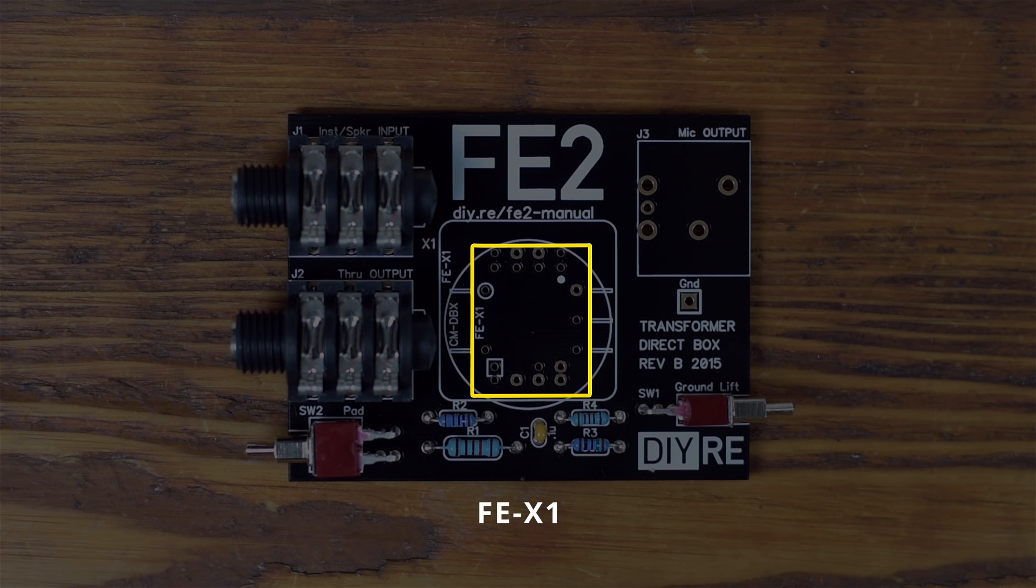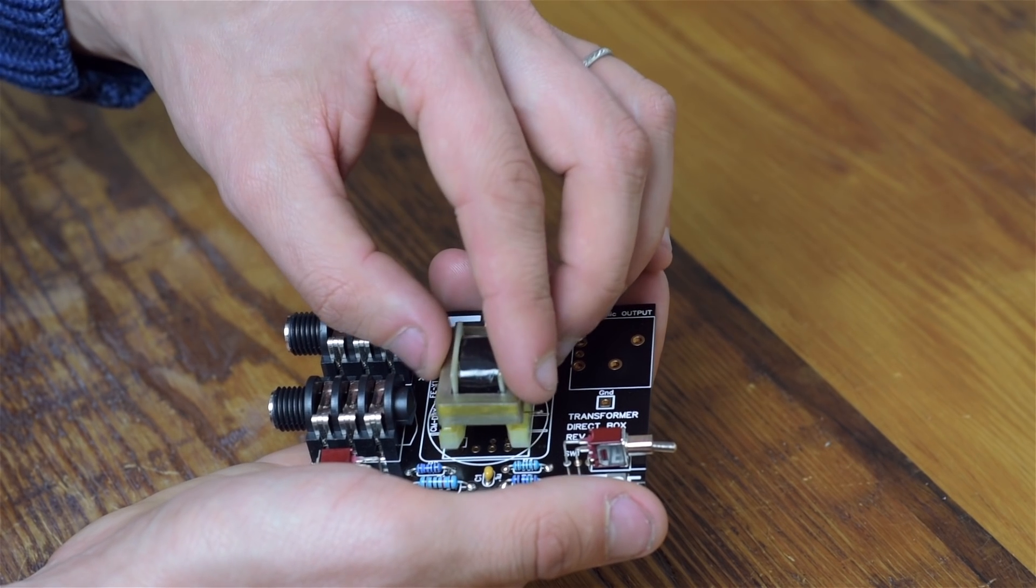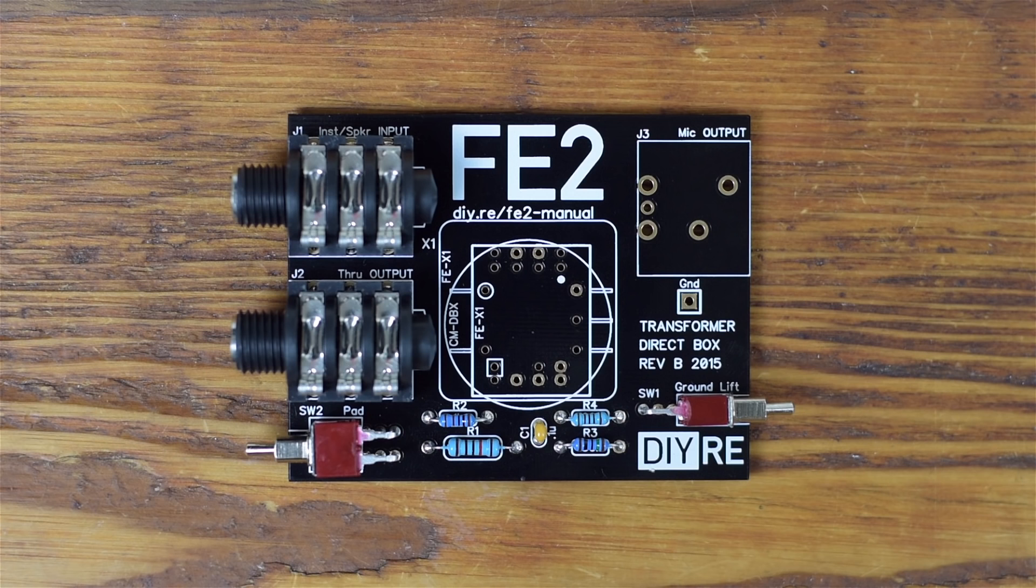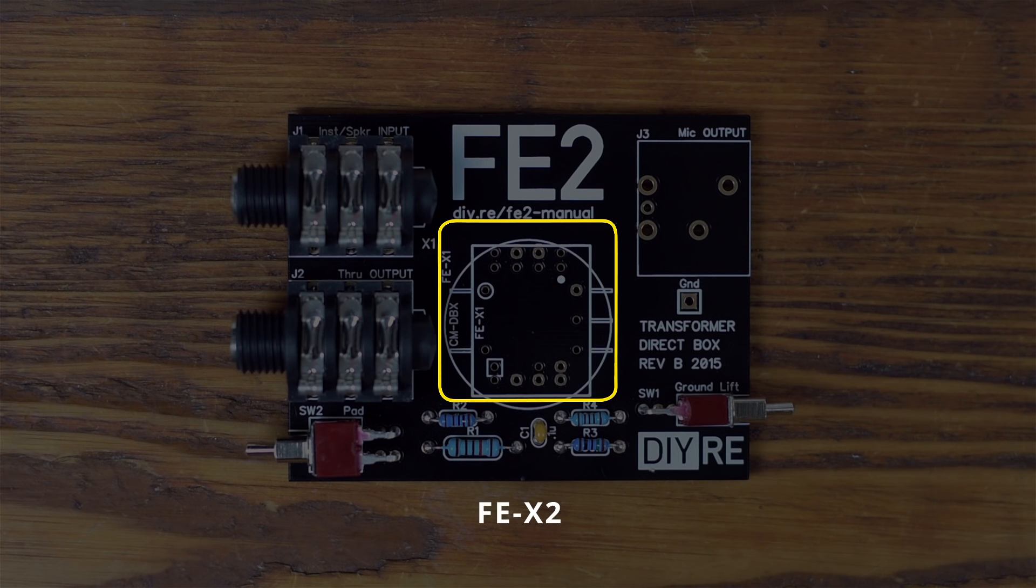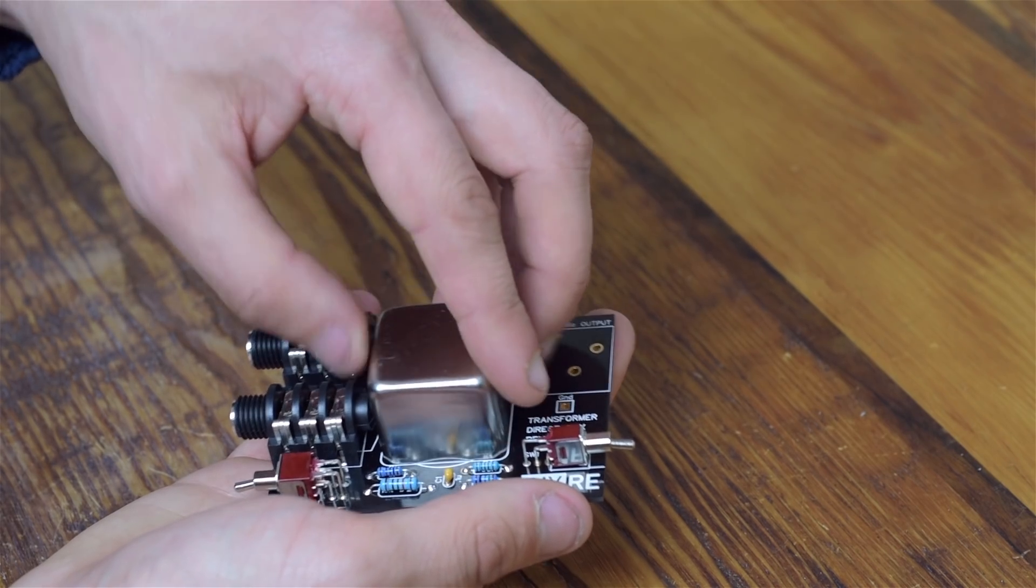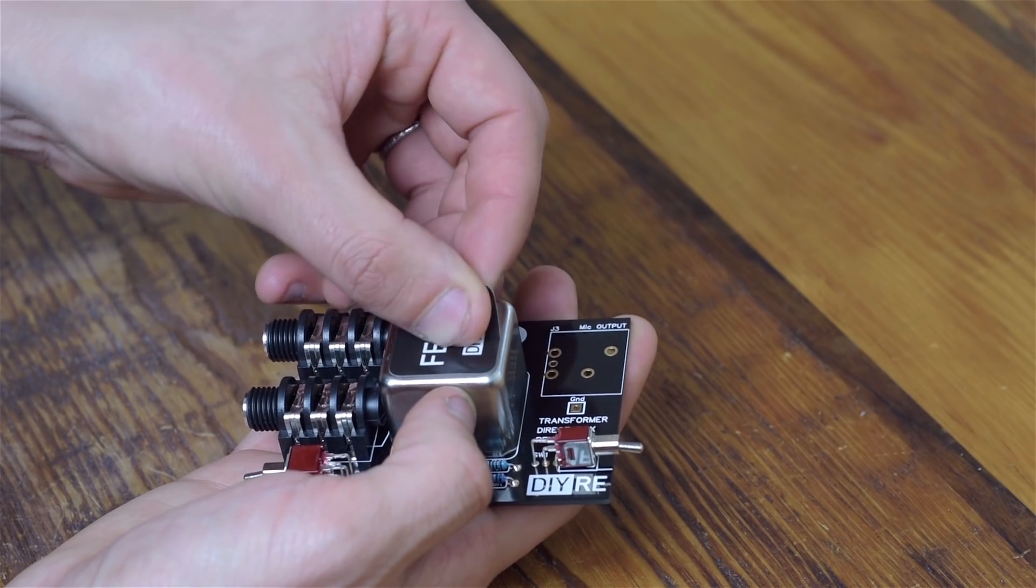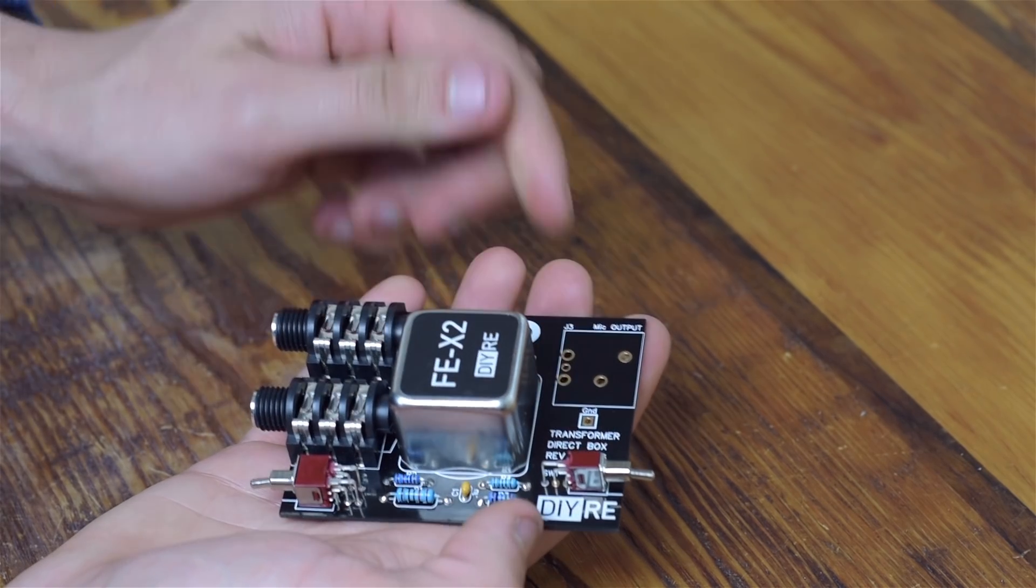FEX1 is highlighted here. Note the pattern of the pins on the transformer and match them to the pads on the circuit board. FEX2 belongs in the largest square footprint. Note that one row of pins has a pin missing. Match this with the pads on the circuit board. Be careful, however, not to place the FEX2 in the pads for the CMDBX because it will fit.